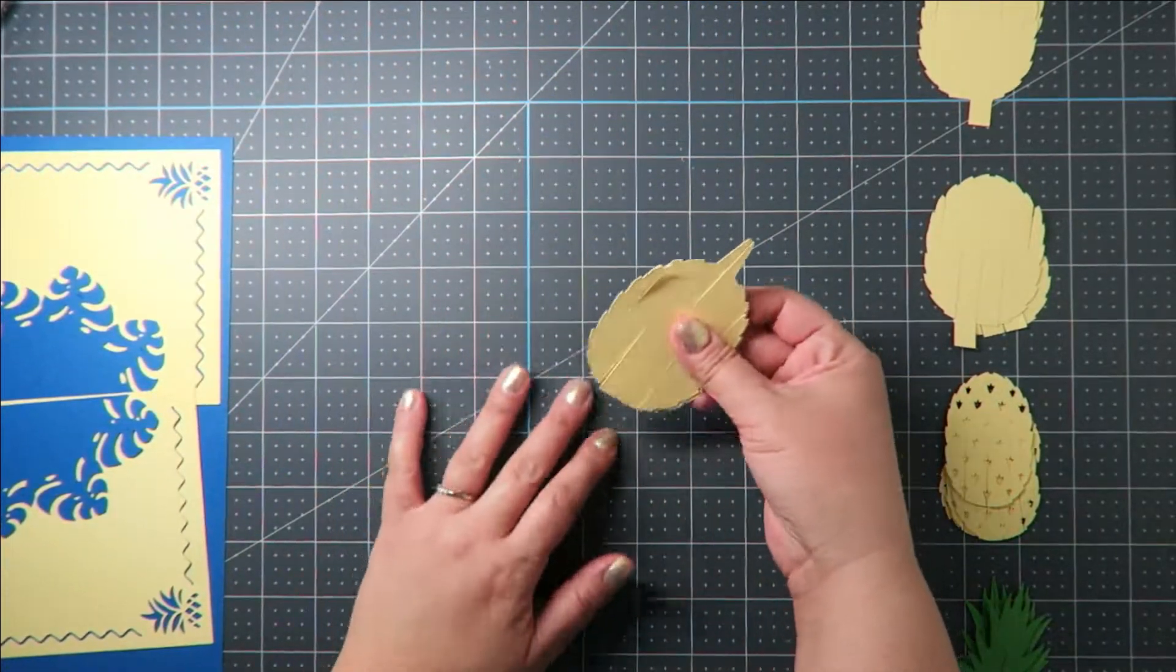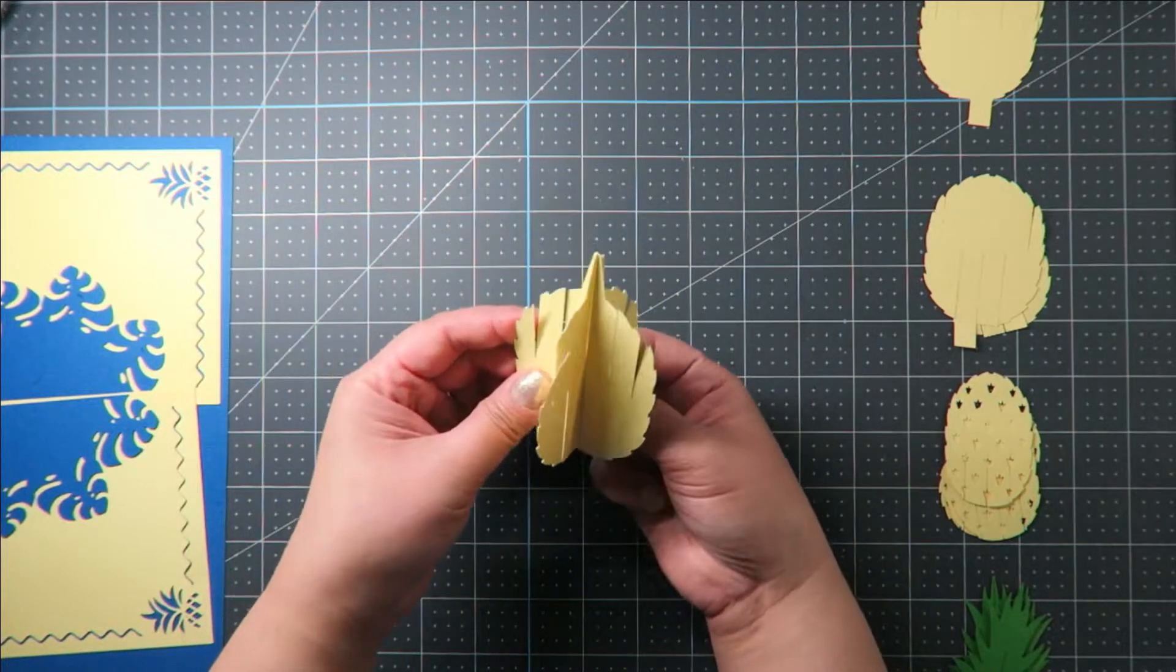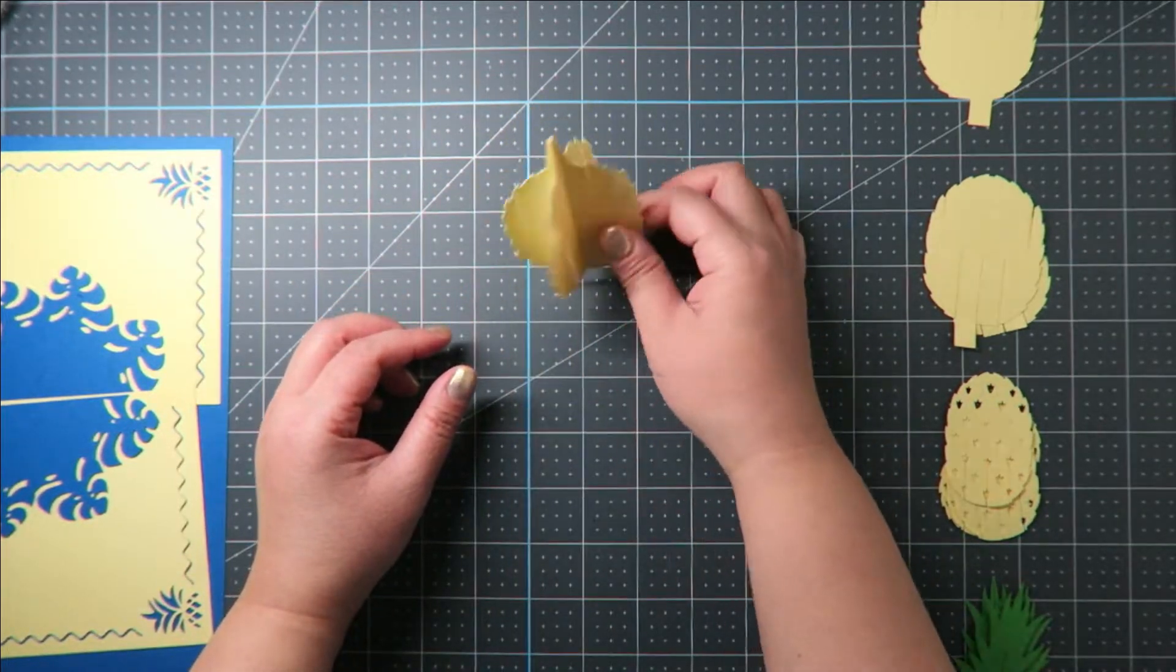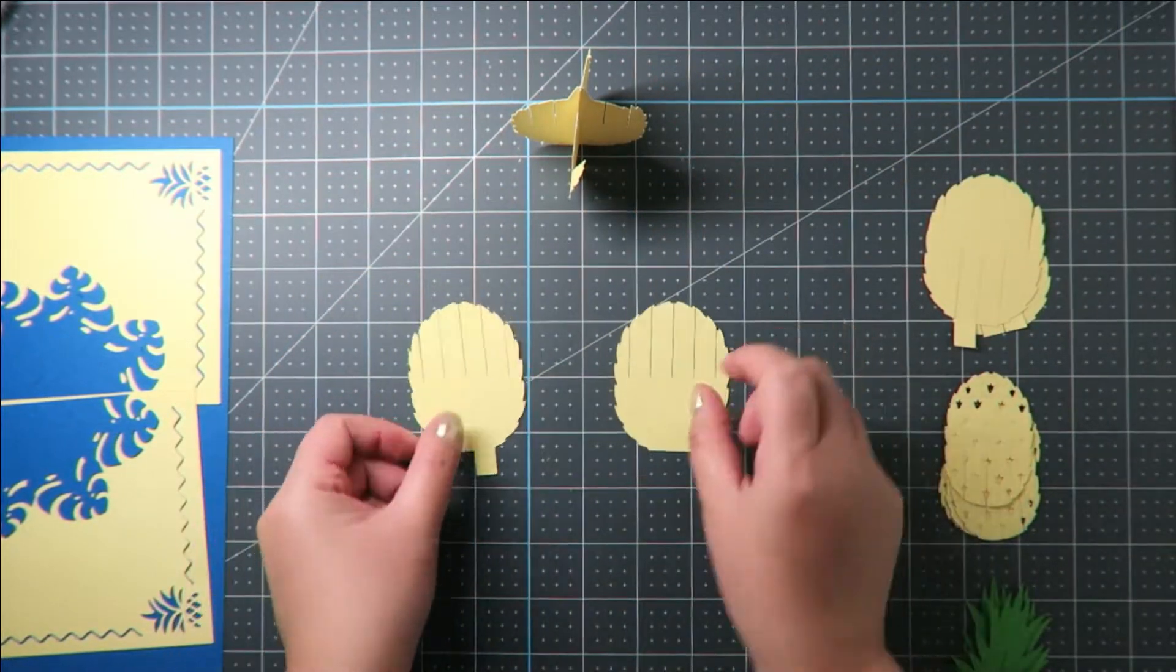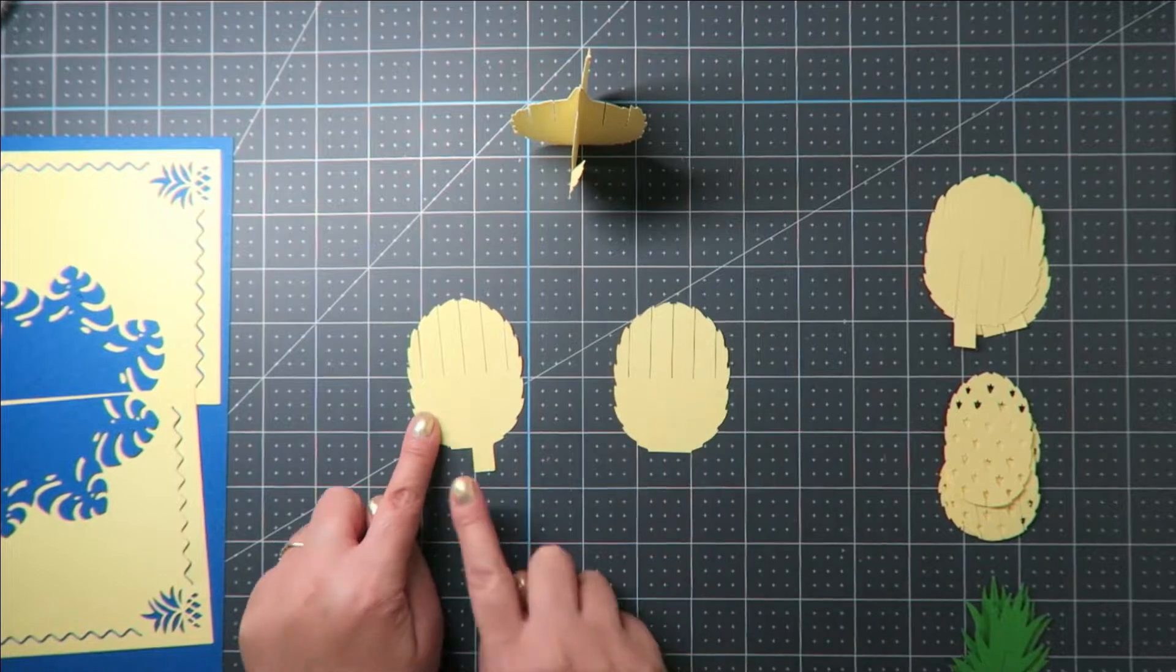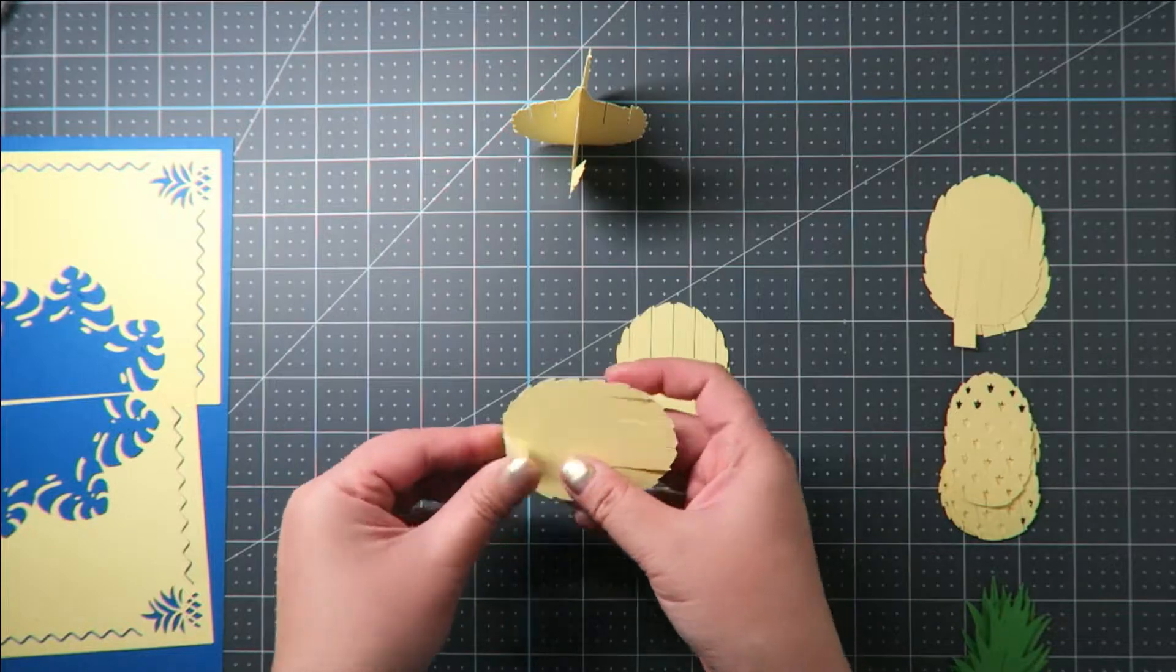But first, we are going to need this central piece. We are going to take the central piece and align the two slits as shown here. And now we have our pineapple base. Next, we are going to take the first set of stabilizing pieces, the ones with the five slits and the glue tab. And we are going to fold that glue tab up as shown.